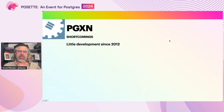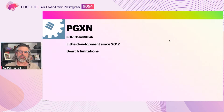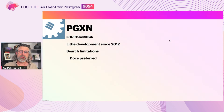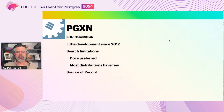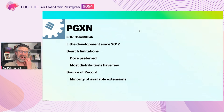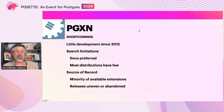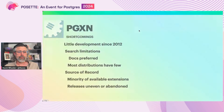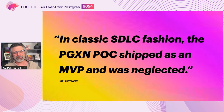Over time, we've recognized a number of shortcomings to PGXN. First and foremost, there's been little work on it since 2012. A couple of years ago I finally made it look decent on mobile devices. Another problem is that PGXN has always suffered from significant search limitations — it defaults to searching extension documentation, but most distributions don't provide documentation separate from a readme at best. Sadly, PGXN has also not become the source of record for Postgres extensions. It contains at most 40% of publicly available extensions, and releases have been uneven with many abandoned, in part because the release process was quite manual until I developed a GitHub test and release workflow a few years ago. In other words, in classic SDLC fashion, the PGXN POC shipped as an MVP and was neglected.